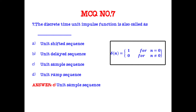The discrete time unit impulse function is also called the unit sample sequence. The expression is: δ(n) = 1 for n = 0, and δ(n) = 0 for n ≠ 0.